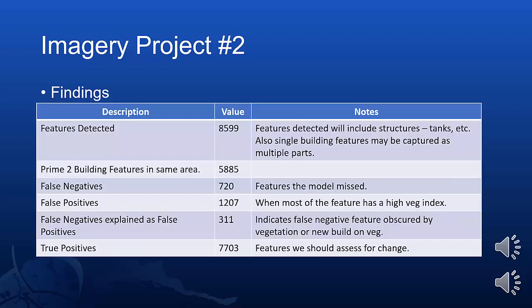Our best performing model identified 8,599 distinct features. In the same area, there were 5,885 Prime 2 building features. On analysis, we identified that our model was actually picking up a number of different tanks and structures that were not included in the building features dataset. Analysis also identified that the model had failed to detect 720 buildings that were also in the Prime 2 dataset. Of the features detected, 1,207 were identified as false positives — these could either be vegetation or artificial surfaces. To try and separate out artificial surfaces from vegetation, we used an NDVI. This left us with 7,703 features that we assumed would be true positives and that we could compare to Prime 2 building features.